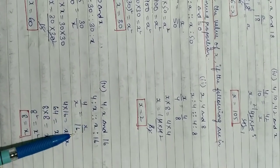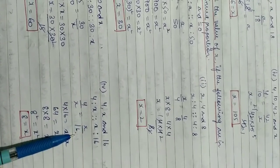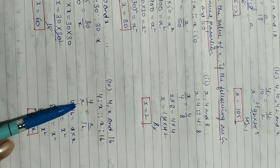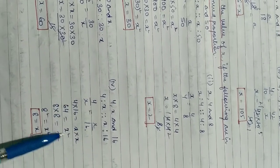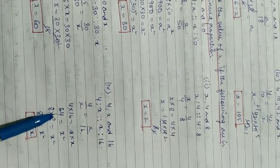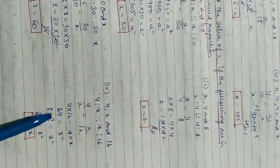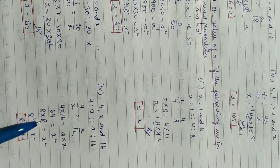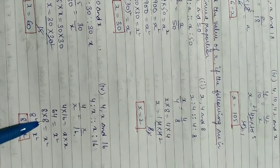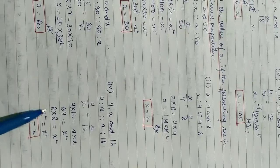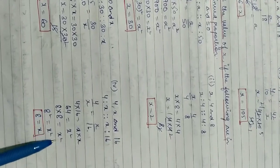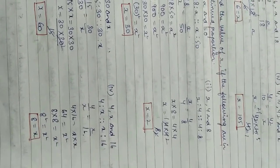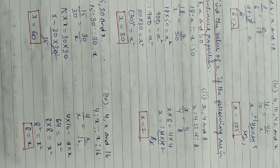Fourth part: 4, x, 16. We write 4 by x equals x by 16, giving x² equals 4 times 16 equals 64. Since 8 times 8 equals 64, x equals 8.